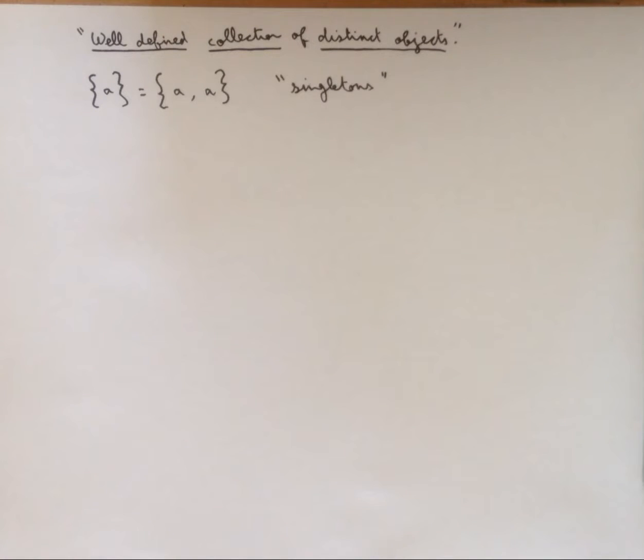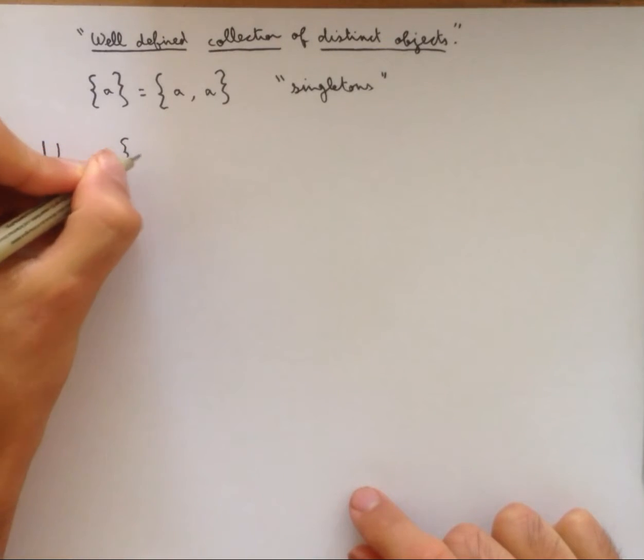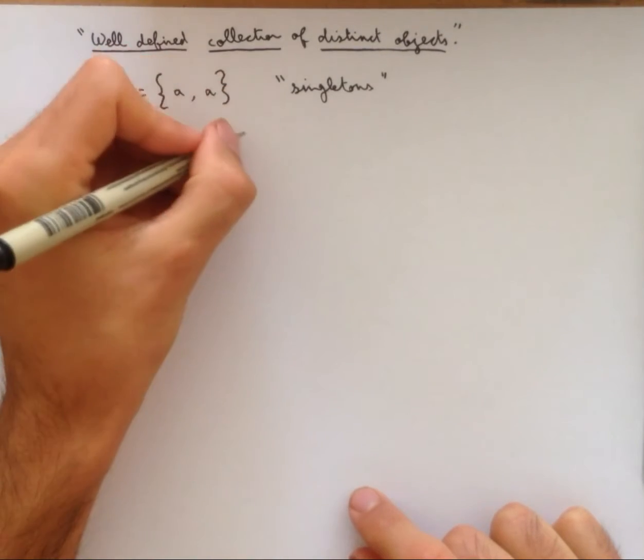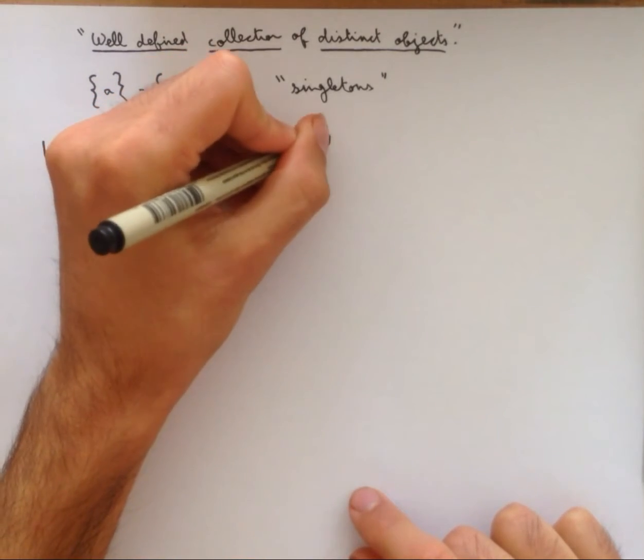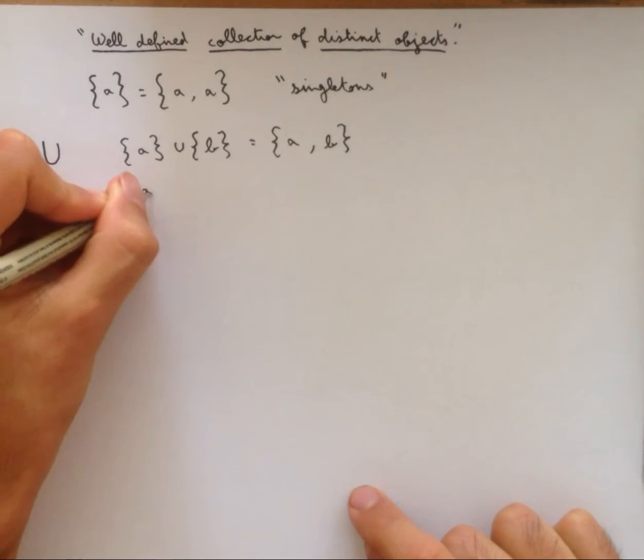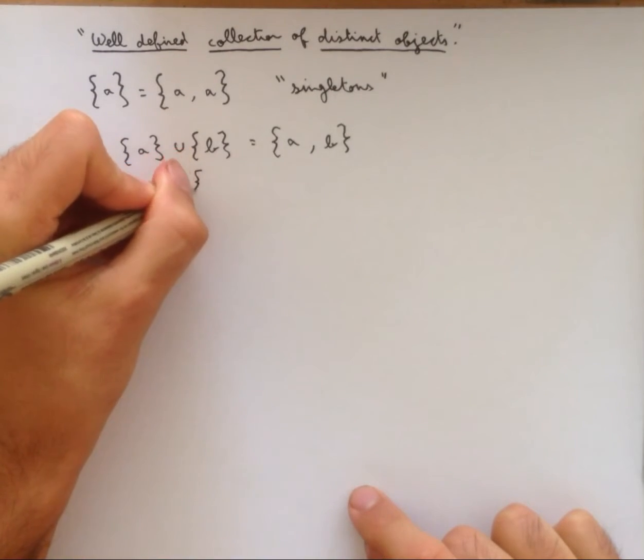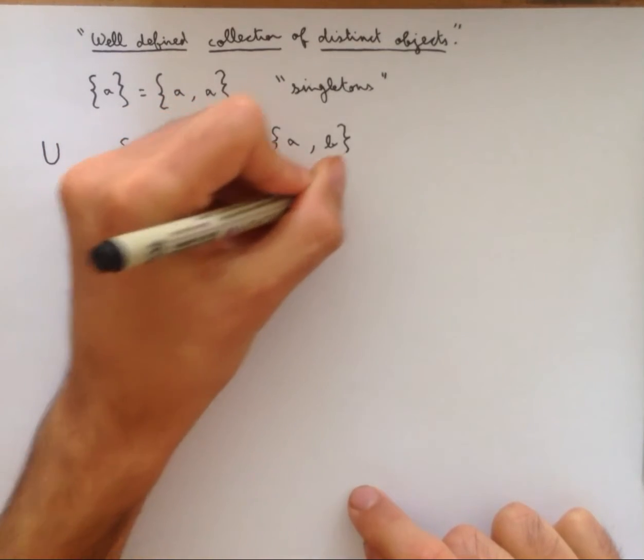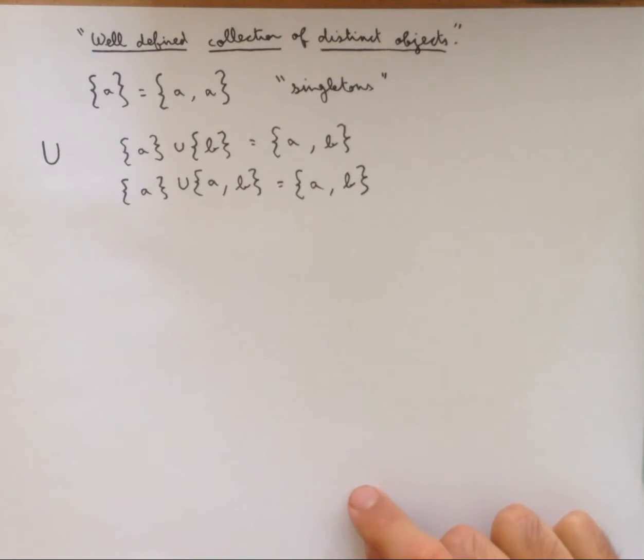Okay. Now that we know what a set is, there's a couple of operations that we can do with them. The first is the union. So it looks like a U. And it takes the elements of two sets and puts them together into one big set. So for example, set a unioned with the set b is equal to the set containing a and b. Another example, the set containing a or singleton a union the set containing a and b is equal to the set containing a and b. Because once again, we got rid of the duplicates.